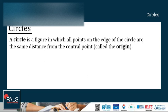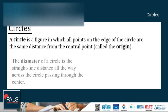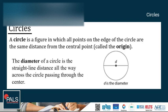Now, let us identify the basic parts of a circle. The first one is the diameter. The diameter of a circle, as shown on the screen, is the straight line distance all the way across the circle passing through the center.